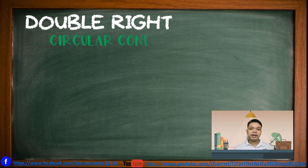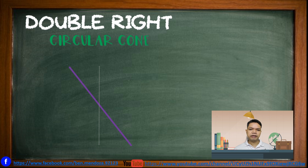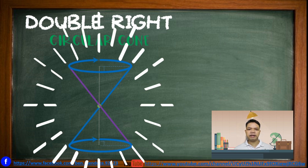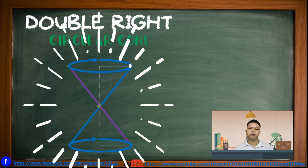What is a double right circular cone, and how does it form? When a straight line cuts a vertical line at a fixed point, and that line rotates about that fixed point, the figure that is formed is what you call a double right circular cone.